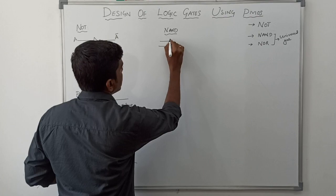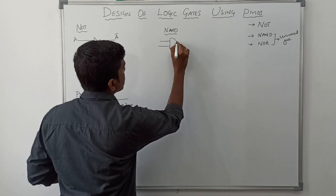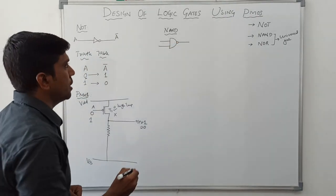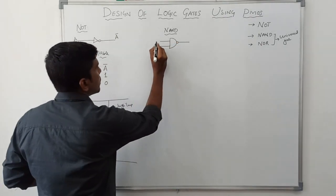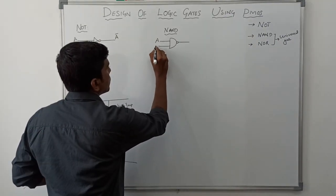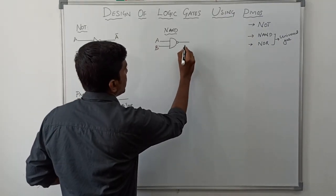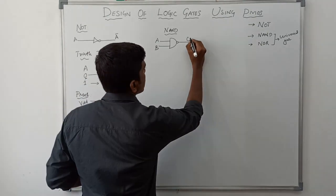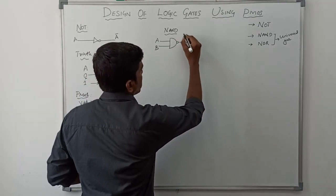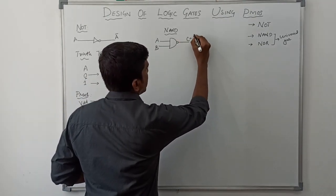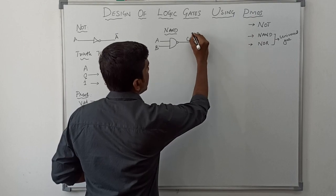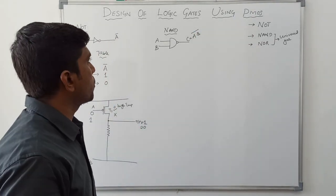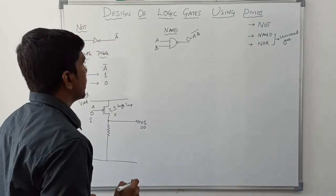Now I am going to discuss the second gate — NAND operation. Let me draw the symbol of NAND gate. Inputs are A and B, and C is the output. The Boolean expression for the NAND gate is A dot B, bar (complement). That is the Boolean expression for the NAND gate.